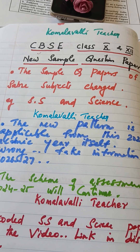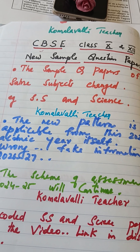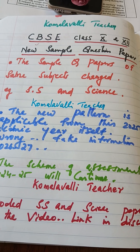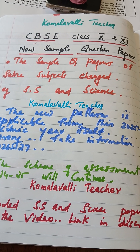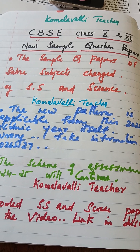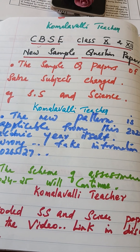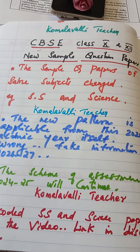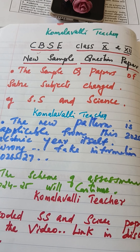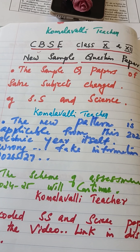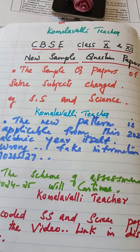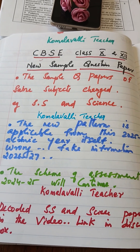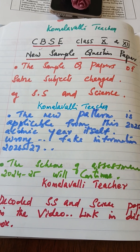In social science class 10, Section A is History, B is Geography, C is Political Science, and D is Economics. For class 10 science, it is A Biology, B Chemistry, and C Physics respectively.